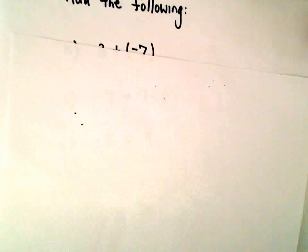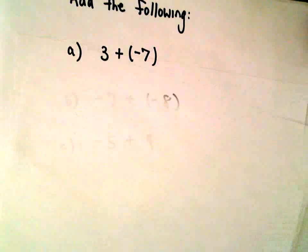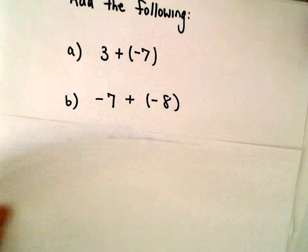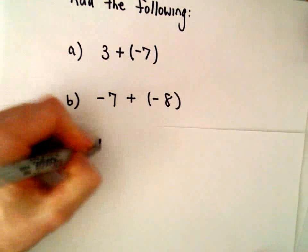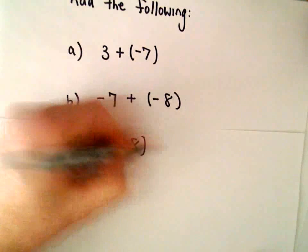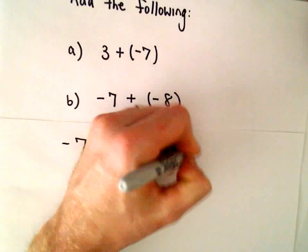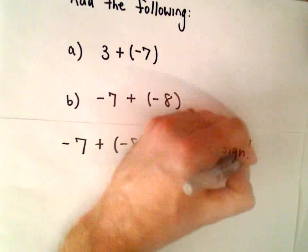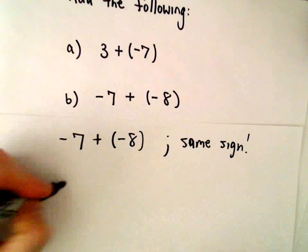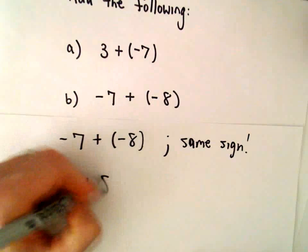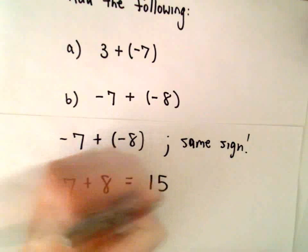Alright, let's go back to part B. So notice now they both have the exact same sign. We've got negative 7 plus negative 8. So in this case, what I do is I pretend they're both positive in my head. I'm just doing positive 7 and positive 8 and getting 15.